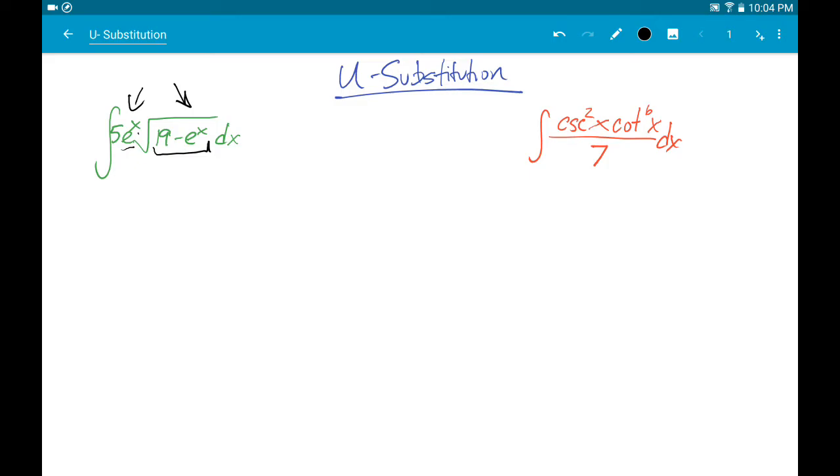So let's see how it works. If I let u equal this inside function, and then I take the derivative with respect to x of that inside function, I get negative e to the x, the constant becomes zero. And then I can rewrite du as negative e to the x dx by moving that dx over.